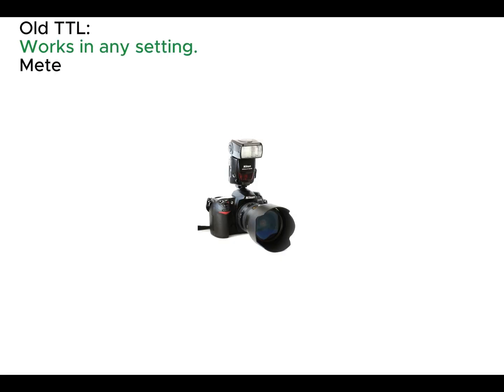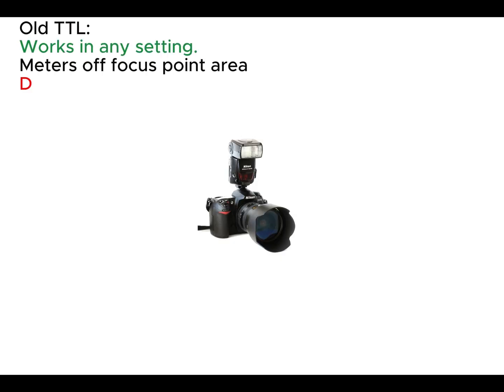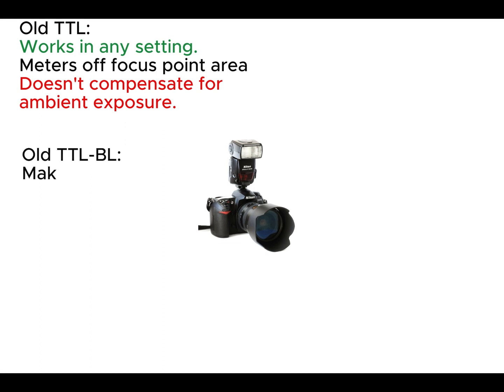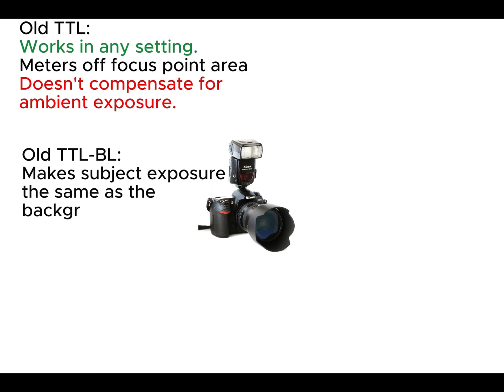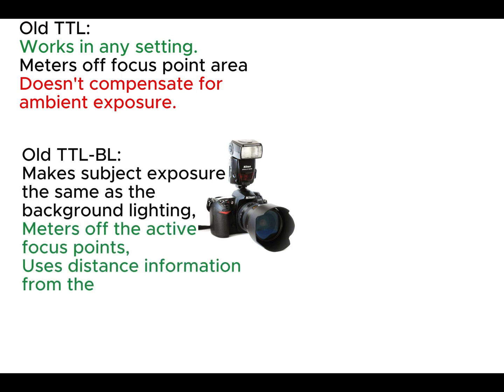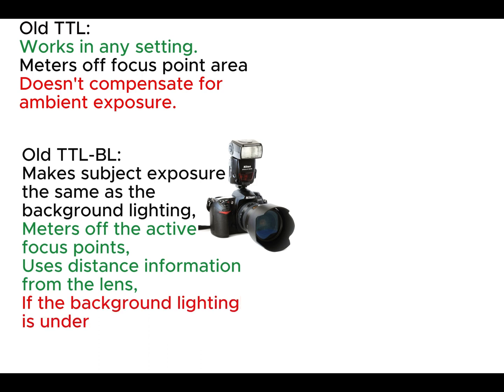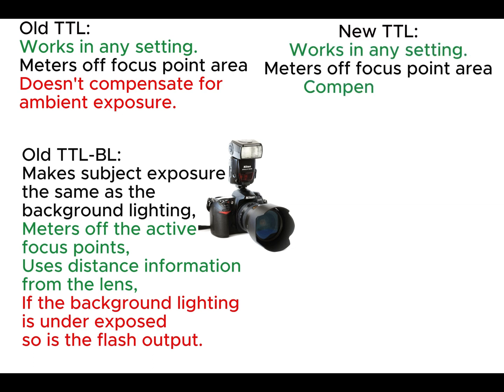Old TTL works in any setting and meters off the focus point area. It doesn't compensate for ambient exposure. Old TTL BL makes subject exposure the same as the background lighting, meters off the active focus points, and uses distance information from the lens. If the background lighting is underexposed, the flash output is as well. New TTL works in any setting, meters off the focus point area, and compensates for ambient exposure.